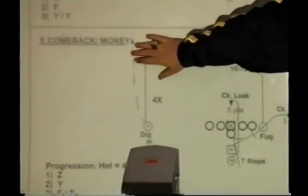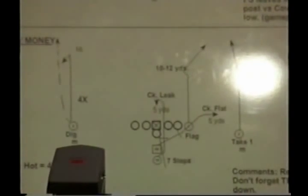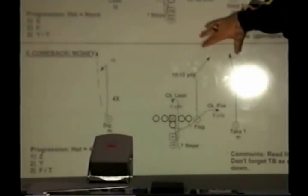Outside receiver pulse, inside receiver, whatever, and the corner route. Still got the cob route over here. So for us, what we call is X-Comeback, and this concept, just put a name to it. We call it money.